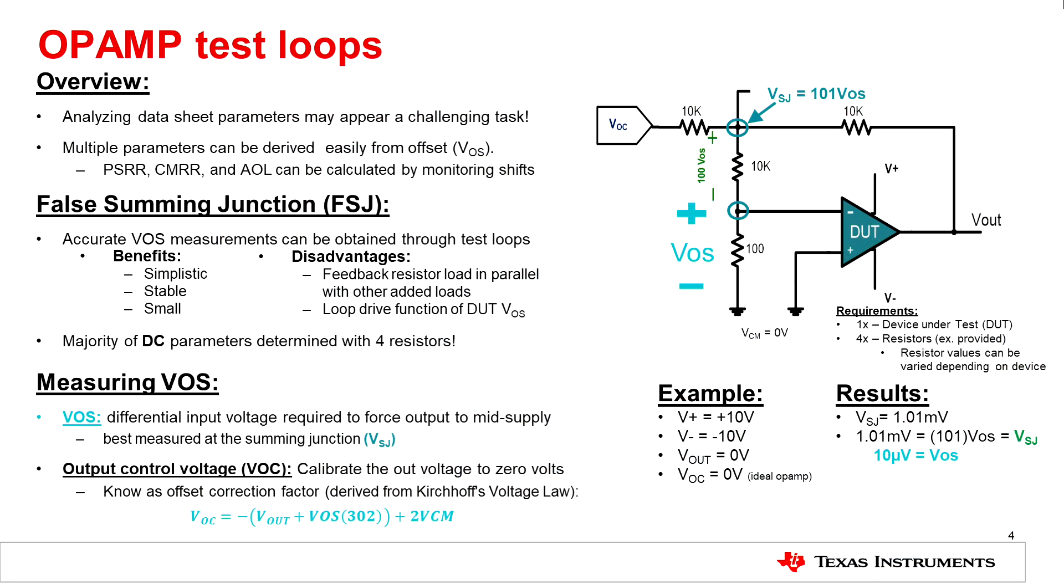For this example, we'll cover the false summing junction. The false summing junction schematic is provided in the upper right-hand corner of the screen. The benefit of the false summing junction is its simplicity and its small form factor. This is mainly due to the fact that the majority of DC parameters can be determined with just four resistors.